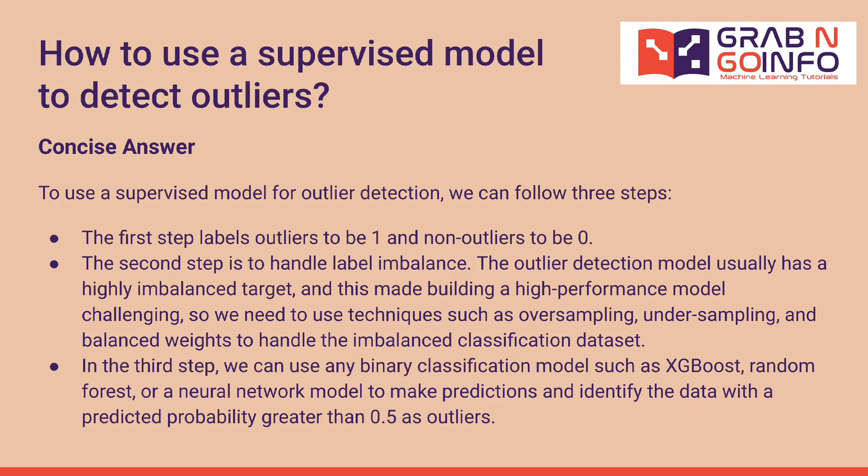Follow-up question 2: how to use a supervised model to detect outliers. We follow three steps. The first step is to label outliers as 1 and non-outliers as 0. The second step is to handle label imbalance — outlier detection models typically have a highly imbalanced target, making high-performance modeling challenging. We use techniques such as oversampling, undersampling, and balanced weights to handle the imbalanced classification dataset.